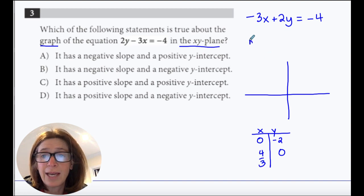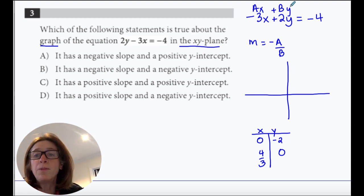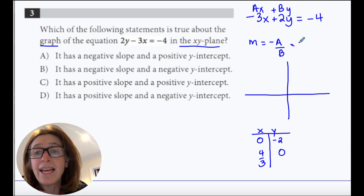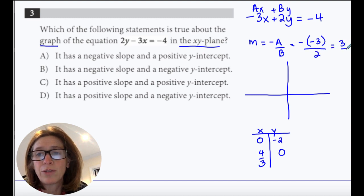My slope, I'm also going to get is negative a over b in standard form. This is my a, and b is the 2. So that would become negative negative 3 over 2. All right, so 3 over 2.